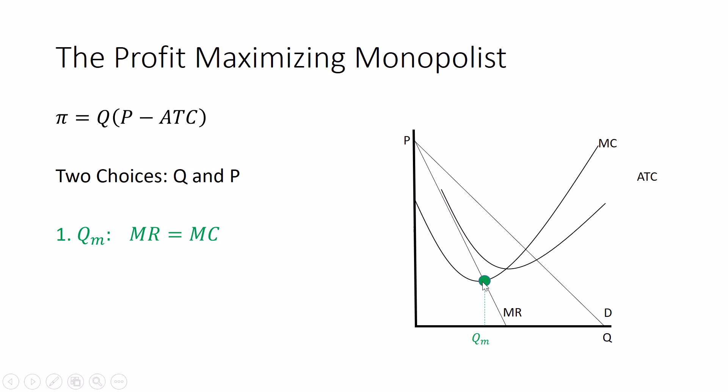Here's the intersection of marginal revenue and marginal cost, and this is the monopoly quantity. At this quantity, we've captured every profitable sale, but we have sold none of the sales where the costs outweigh the revenues.